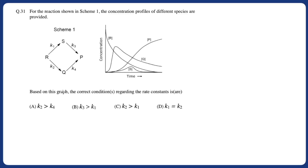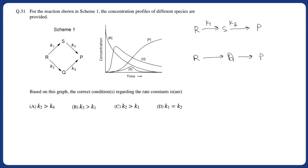Based on the graph, the correct condition regarding the rate constant is — what is the correct condition? First you have to see that the reactant is R and the final product is P, formed through two routes: one through S and the other through Q. So R goes to S then to P with rate constants k1 and k3, and R goes to Q then to P — these are two consecutive reactions.